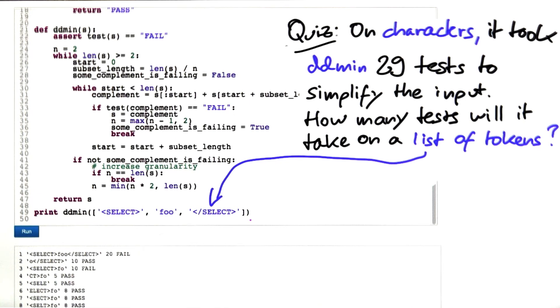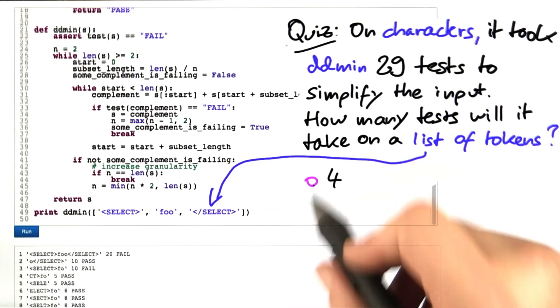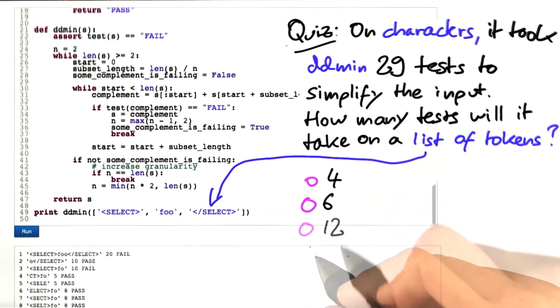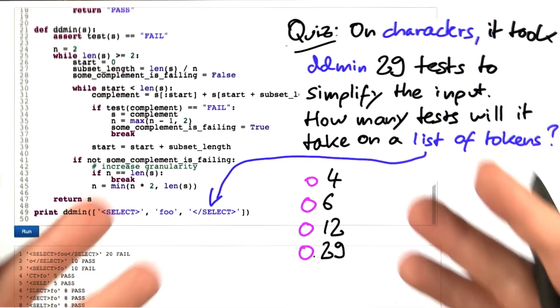How many tests will it take on a list of tokens, that is on this list of tokens? And here a token is a substring with a decisive meaning. You can try this out for yourself, or just estimate. Is this 4 tests? Is this 6 tests? Is that 12 tests? Or is that 29 tests? Over to you.